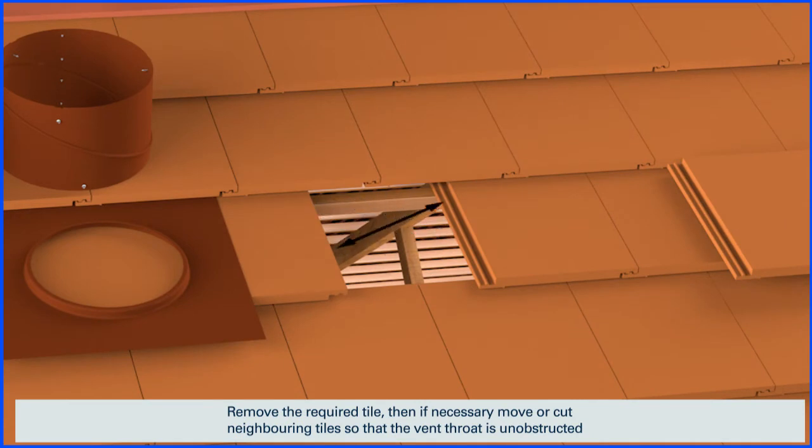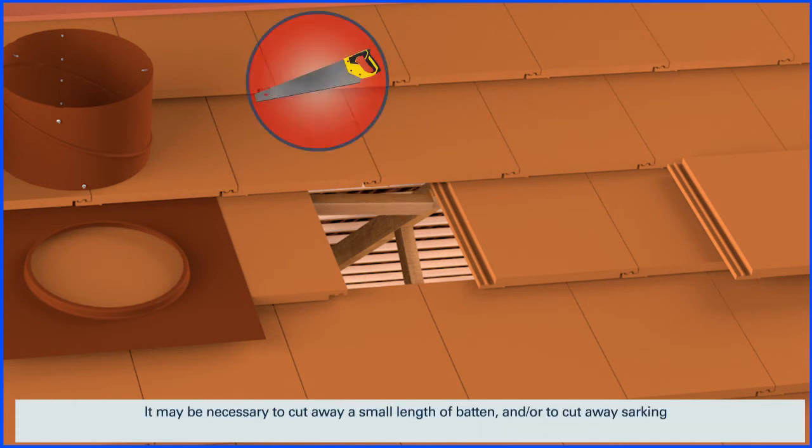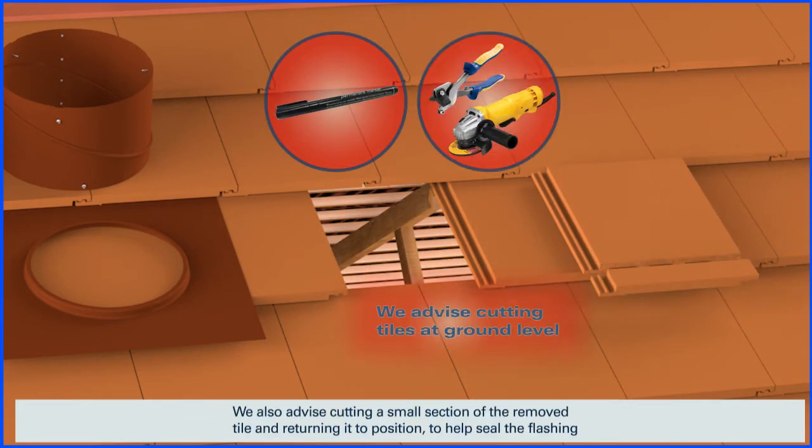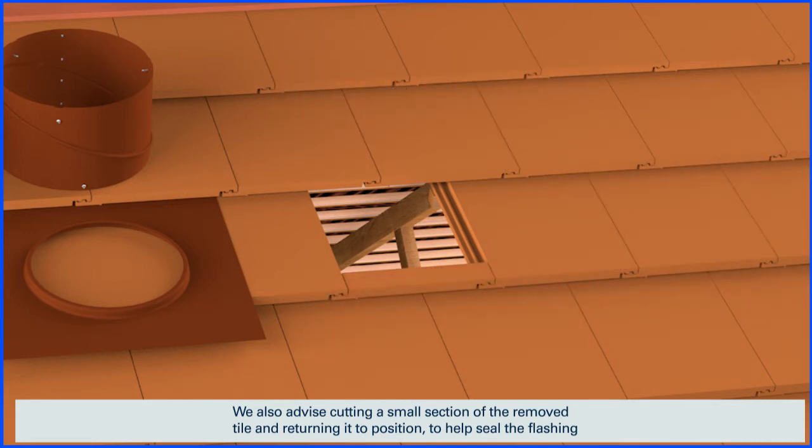Remove the required tile, then if necessary, move or cut neighbouring tiles so that the vent throat is unobstructed. It may be necessary to cut away a small length of batten and or to cut away sarking. We also advise cutting a small section of the removed tile and returning it to position to help seal the flashing.